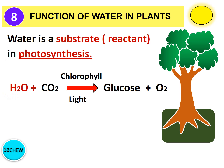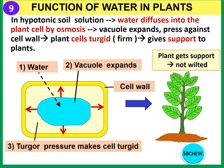Lastly, water plays an important role in giving support to the plant so that it does not wilt. In a hypotonic soil solution — more dilute than the cell sap — there is a higher concentration of water molecules, so water diffuses into the plant cells by osmosis. The vacuole expands as it stores water, pressing against the cell wall and creating turgor pressure, making the cell turgid and firm, which keeps the stem upright and leaves held out horizontally for photosynthesis.